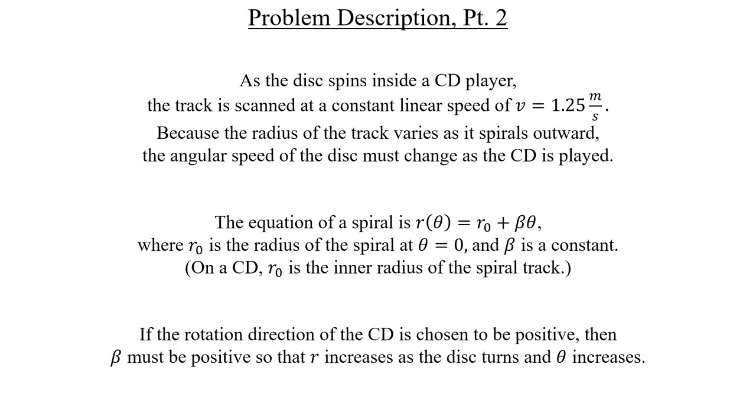In our problem, this spiral track of pits and gaps is being scanned by our CD player at a constant linear speed, and the radius of that spiral, as a function of the angle, is given to us in that second paragraph. We're also going to set the direction that the CD rotates in as positive, and this means the beta constant in our spiral radius equation will be positive as well.